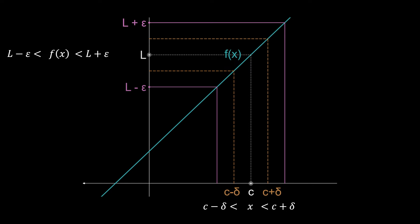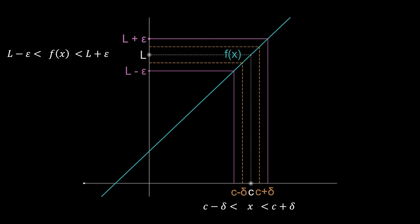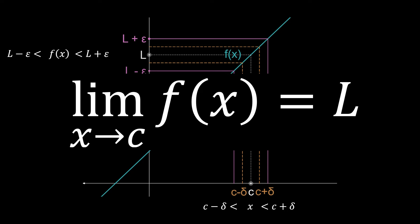It is important to note that even if we choose a δ smaller than what is shown on the screen, f(x) will still be within the ε radius of L for all x within the c-δ < x < c+δ range. Therefore, the function f(x) converges to L as x approaches c.